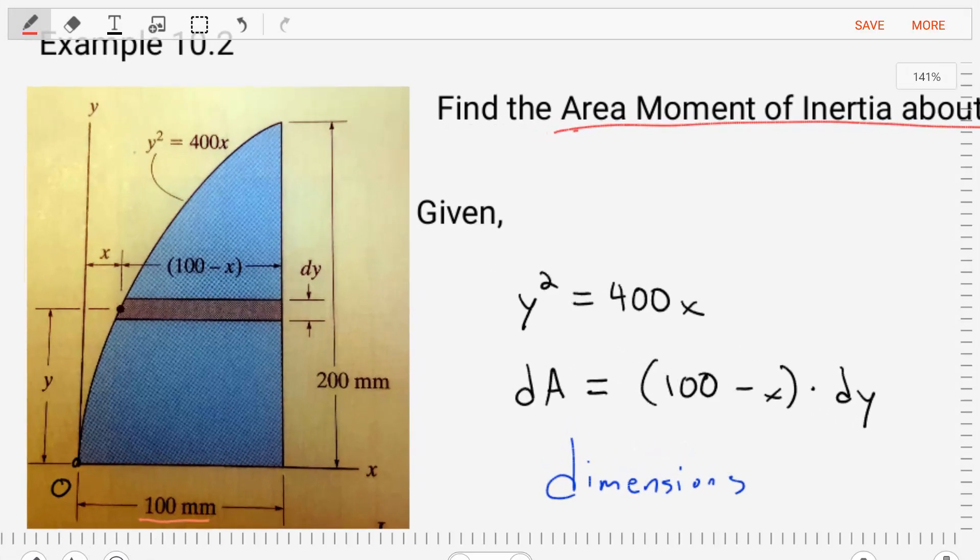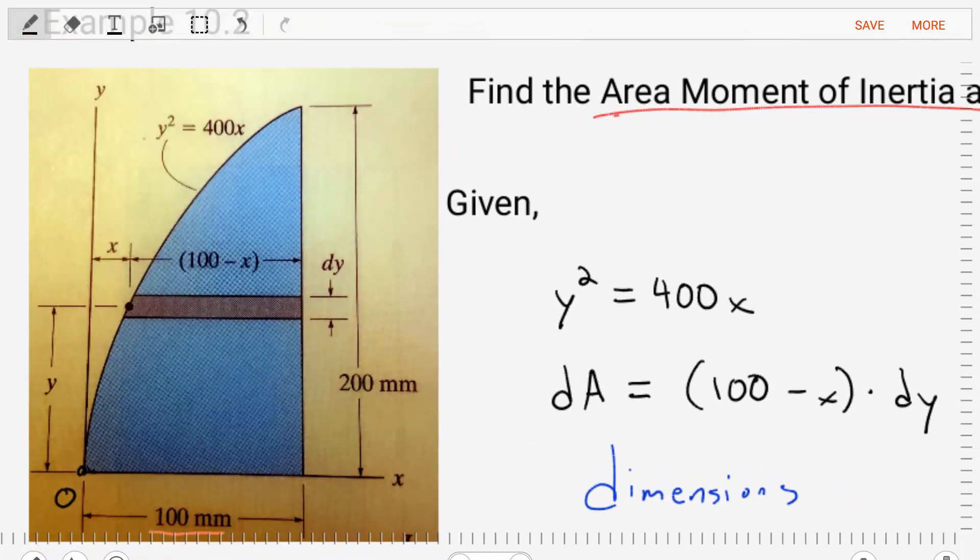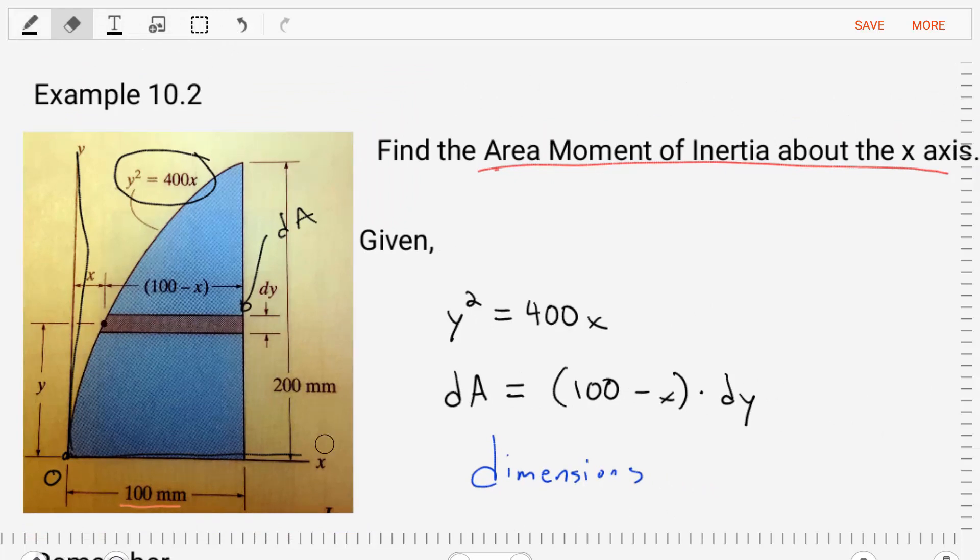We're given the area shown where we have our x-axis, y-axis. The area is defined by a line y squared equals 400 times x, and we're also given a differential area that we should use where dA, the differential area, is equal to 100 minus x times dy. Other information that we have include the dimensions of this area, its base and its height.